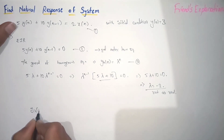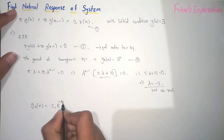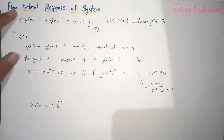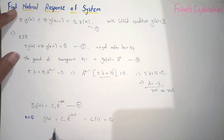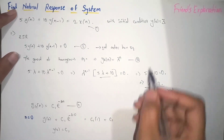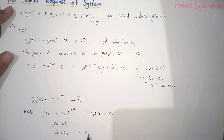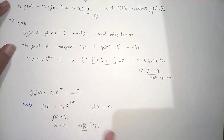Since the root is real, the homogeneous equation becomes y_h(n) = C1 · e^(λn), where λ = −2. We call this equation 4. To find C1, we substitute n = 0: y(0) = C1 · e^0 = C1. From the initial conditions, y(0) = 3, so C1 = 3.